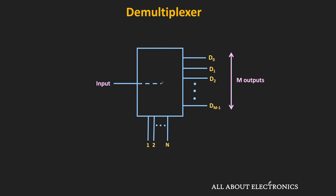Depending on the input at the selection line, the input is connected to a specific output line. Since the selection line input is in binary form, to select m different outputs, the required number of selection lines is log m to the base 2. With n selection lines, we can address 2^n different outputs — meaning m = 2^n, or n = log m to the base 2.